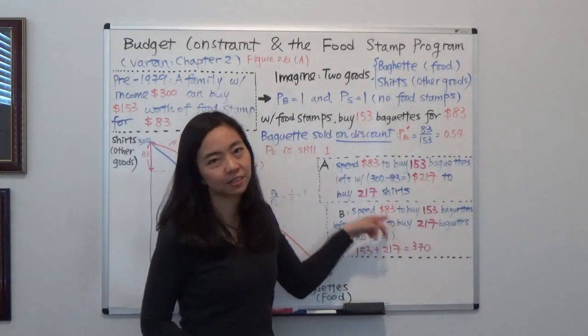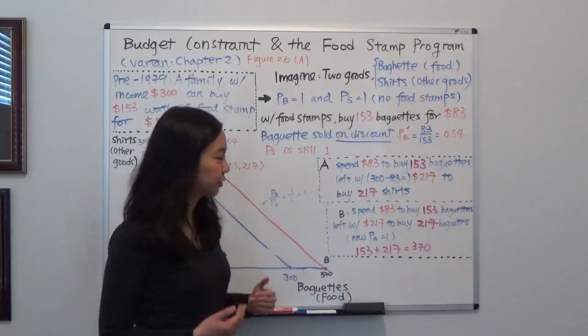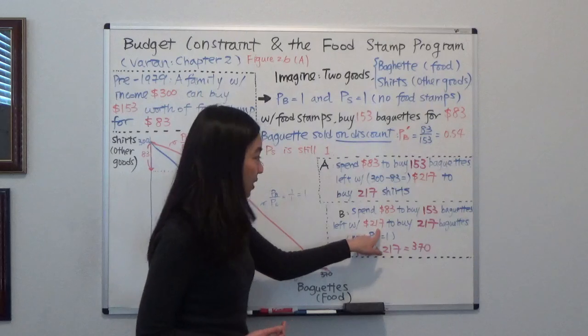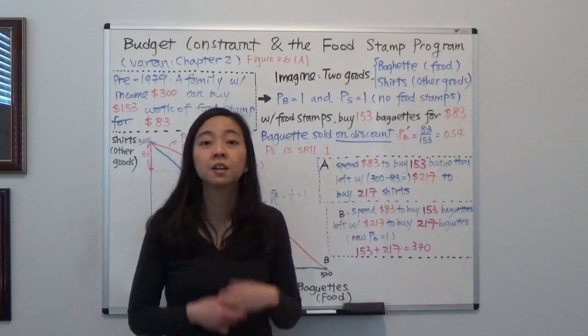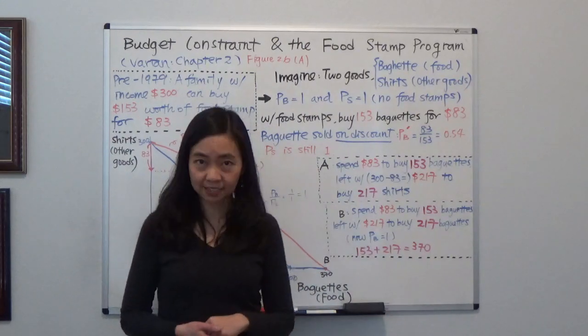Afterwards, you want to buy more baguettes, you have to pay $1. So how much money do you have left? You have $217 left after you spend $83 to buy baguettes on discount. So afterwards, how many baguettes can you buy?